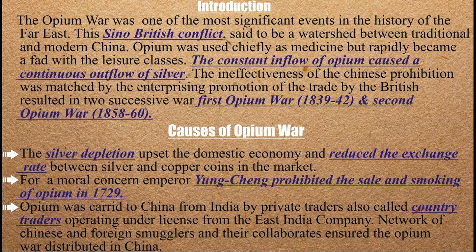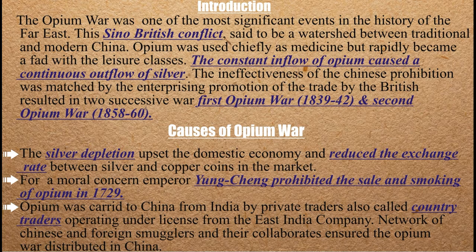In China, there were private traders called country traders. They worked under the East India Company and had a very extensive network. Ships were stationed near Lintin Island — small, fast boats — and dealers would come to collect opium in small amounts. The dealers would then distribute it further. This was the opium trade network.